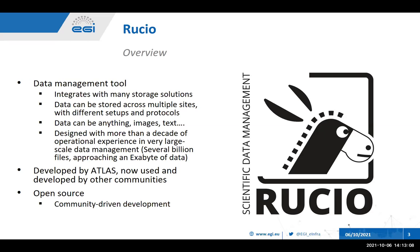Ruscio was originally developed by Atlas, one of the LHC experiments, more than 10 years ago, to replace their older data management system. Ruscio is still being developed with the future in mind, with LHC run three and the high luminosity experiments coming up. The amount of data being produced and the size of files being produced is going to increase, and therefore Ruscio is looking as far ahead as that to make sure it's able to move all this data around. But with the success of the software for Atlas, other communities have come along and also wanted to use Ruscio for their needs.